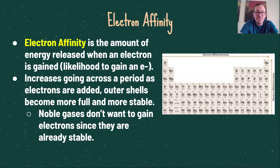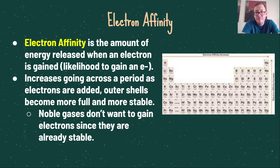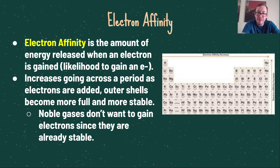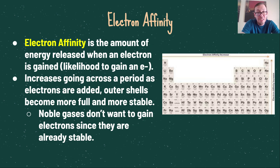Electron affinity is the amount of energy released when an electron is gained, or essentially the likelihood to gain an electron. This increases going across a period — as electrons are added, outer shells become more full and more stable. Noble gases don't want to gain electrons as they're already stable. It's really about what gets an atom closer to a full outer shell of electrons, which results in the lowest potential energy possible. Lithium, for example, is more likely to lose one electron to become isoelectronic with helium than to gain seven to become isoelectronic with neon.